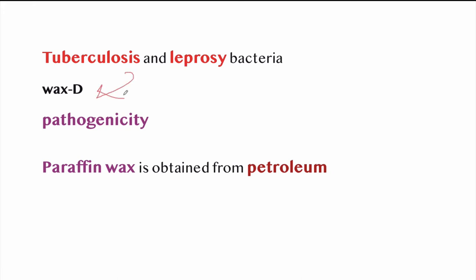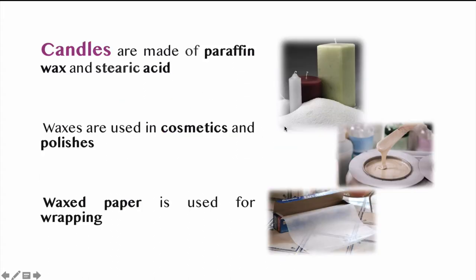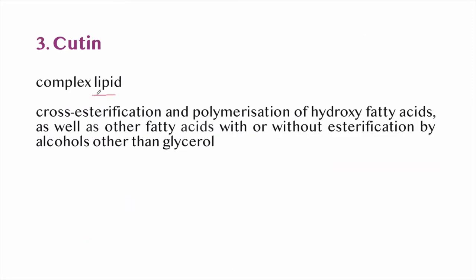Tuberculosis and leprosy bacteria produce a wax known as wax D, which is a major factor in their pathogenicity. Paraffin wax is obtained from petroleum; candles are made of paraffin and stearic acid. Waxes are used in cosmetics and polishes, and wax paper is used for wrapping.